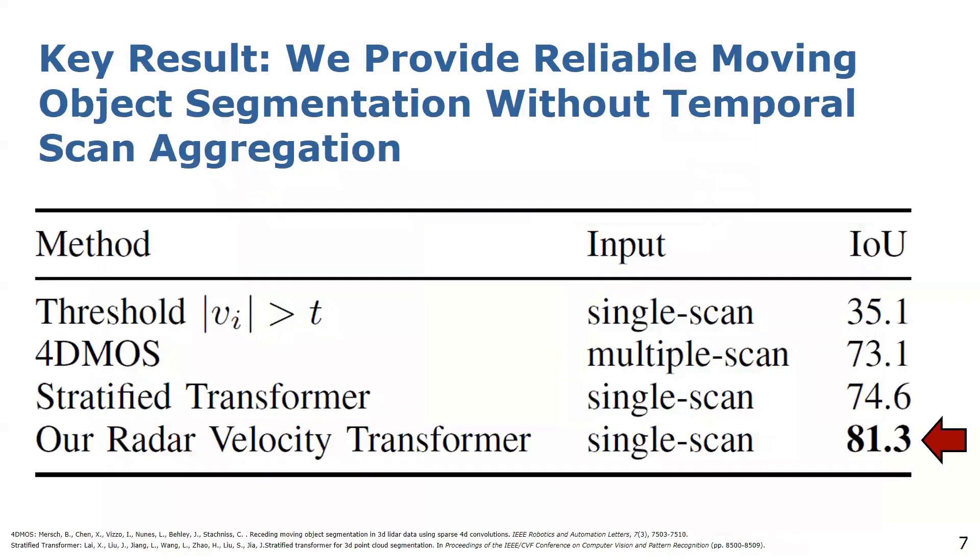We perform the evaluation on the radar scenes dataset and compare our radar velocity transformer to state-of-the-art methods. The transformer-based methods enhance the performance compared to voxel-based 4DMOS which suggests that discretization artifacts lead to information loss that cannot be compensated by additional temporal information of consecutive scans. The feature input vector of the stratified transformer and radar velocity transformer both contain the valuable velocity information. However, our radar velocity transformer considerably improves the IOU for moving objects by 6.7 absolute percentage points.